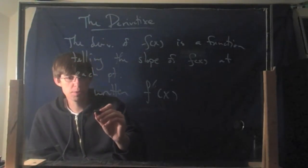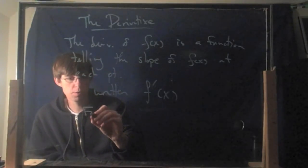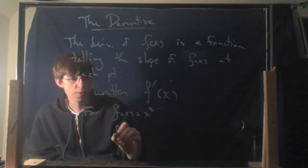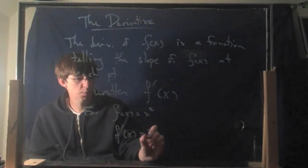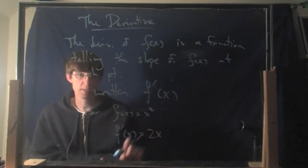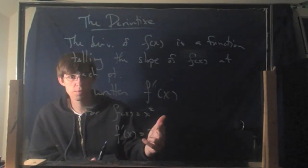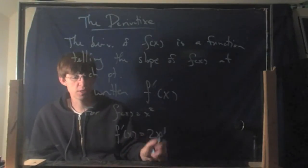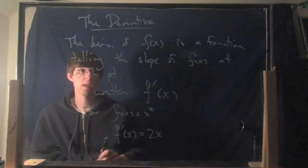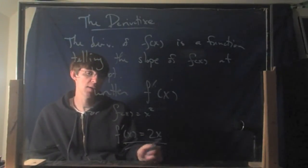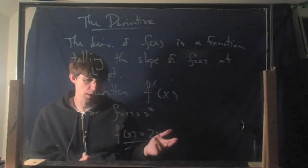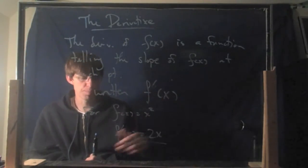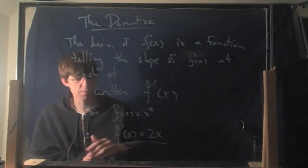It's written like this: f(x) with a little apostrophe — that's called f prime of x. That means the derivative of a function. So in the example we were just talking about, for f(x) = x², we decided f prime of x is equal to 2 times x. If you have x² as your first function, the slope of that curve is actually equal to 2x.